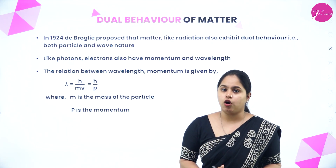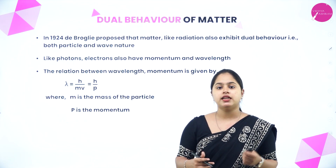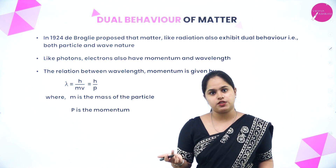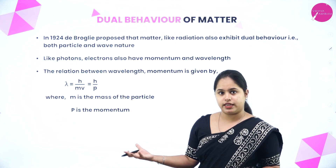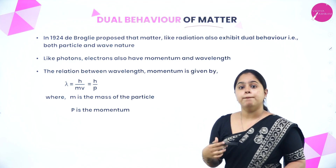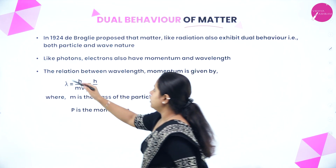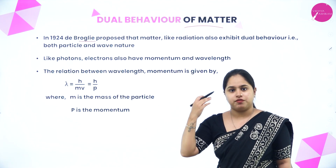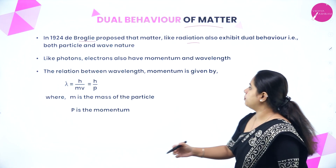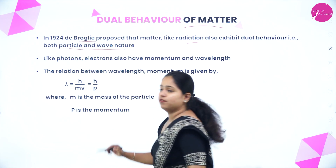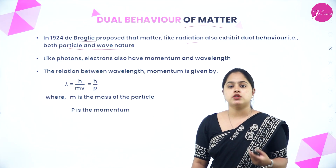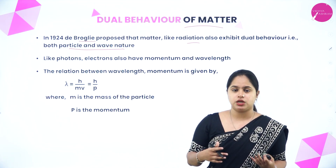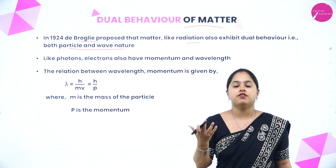Let us begin with the dual behavior of matter. In previous sessions we studied that electromagnetic radiation has dual behavior — it behaves as both particle and wave. In 1924, de Broglie proposed that matter, like radiation, also exhibits dual behavior — both particle and wave nature. He concluded that just like electromagnetic radiation, matter also exhibits wave and particle nature.